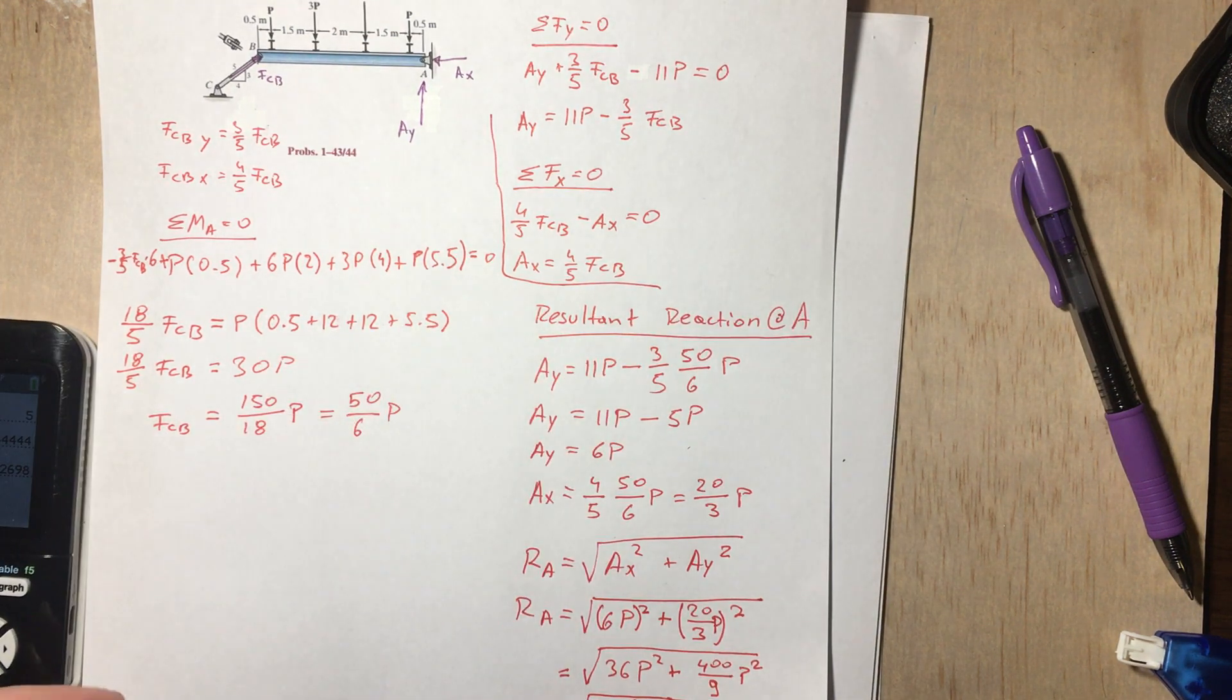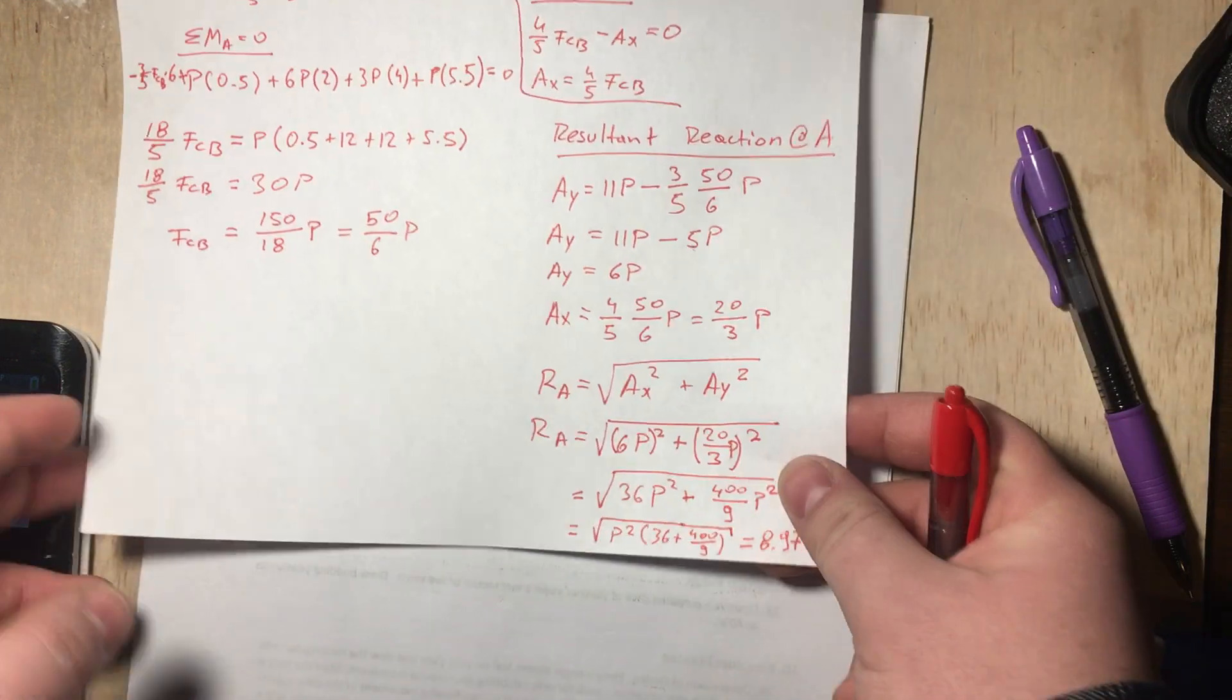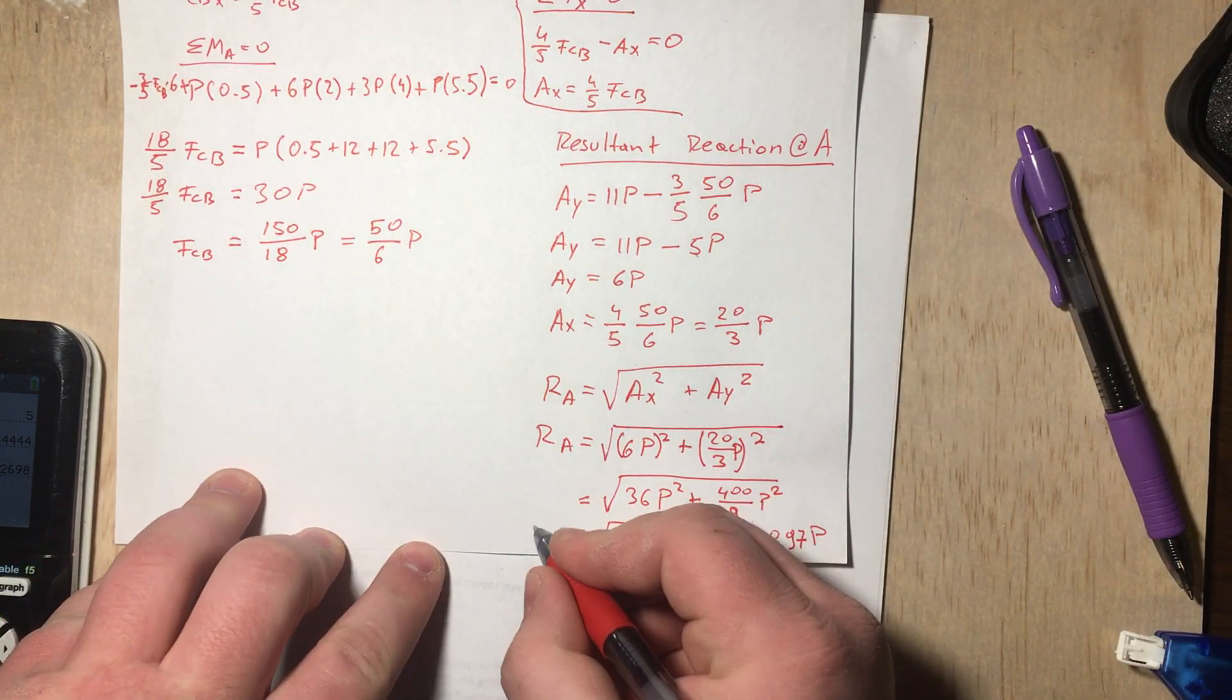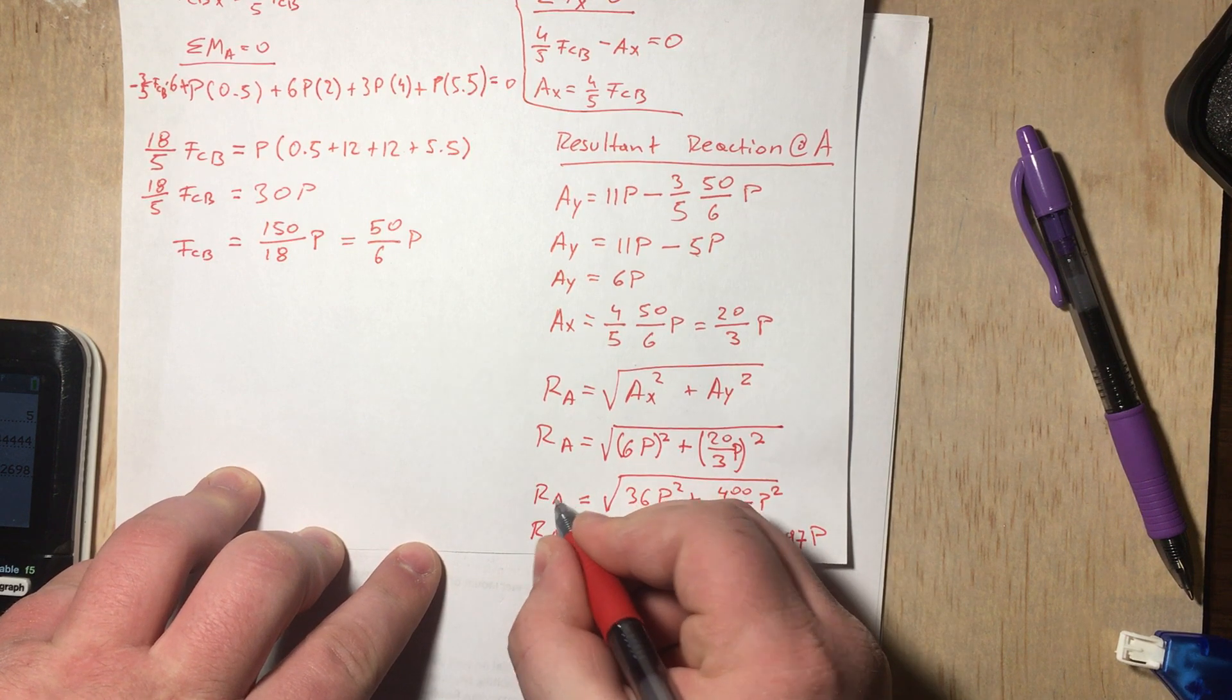That is going to be 8.97P. If we take the square root because 36 plus 400 divided by 9, that is 80.4, so if we take the square root of that we get 8.97, and P squared is of course just P. So far so good with our resultant at A.